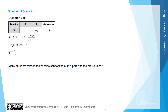From the examiner's report, just under 20% of students got the mark for that question. Many students missed the specific connection between this part and the previous part of the question. It's really important to think about why examiners step you through certain parts and consider whether those parts are intended to be linked.